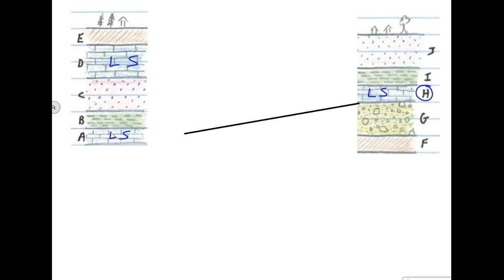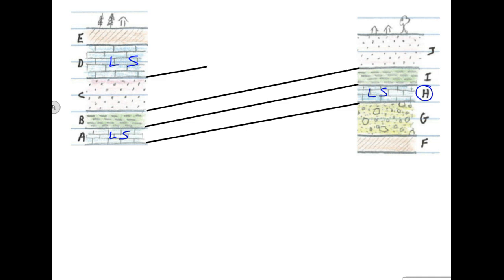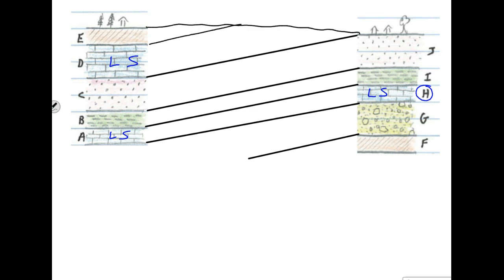Which one does layer H most likely match up with? Considering that above layer H there's layer I, which is a shell, and above layer A is layer B, which is also a shell, while above layer D is layer E, which is a gypsum — I would much rather match up the shells and the limestones together. So I think the layers match up accordingly. From there, a sandstone seems to match up well with that sandstone, and we could probably guess where the surface of the earth is. So we just did some correlation.